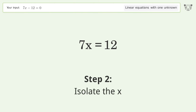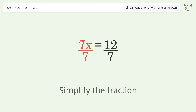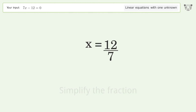Isolate x by dividing both sides by 7, then simplify the fraction. The final result is x equals 12 over 7.